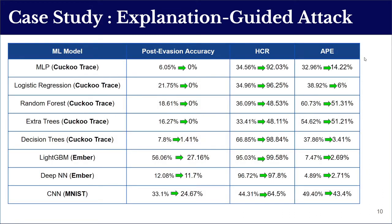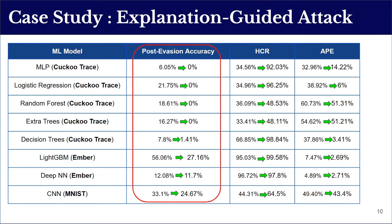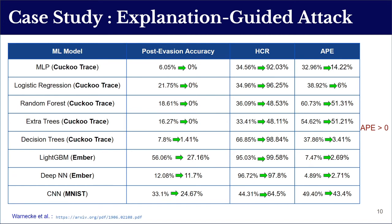To assess how much this idea improves correlation results, we experimented using the same previous setup. Results show that an explanation-guided attack can lead to more correlated perturbations and fewer negative perturbations, as indicated by improved high correlation rate and average perturbation error. It can also improve the aggregate evasion accuracy for all studied models, as the post-evasion accuracy decreases after employing explanation-guided feature selection before perturbations. However, this approach still makes perturbation errors.